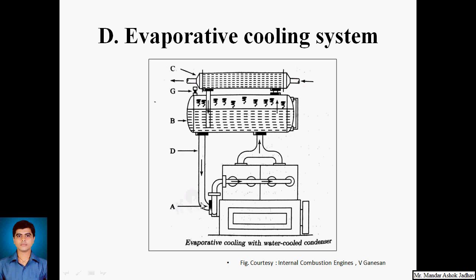A separate condenser, represented by C, is used to condense the steam. The pump circulates water through the engine jackets; the water absorbs heat and is converted to steam, which is collected in tank B. The steam is then circulated through the condenser — in this case a water-cooled condenser, with a separate water circuit. The steam is condensed back to water, flows by gravity through tank B, and is pumped via pipe D back to the engine, completing the cycle.